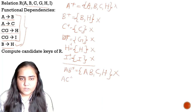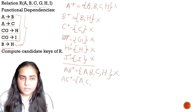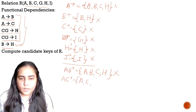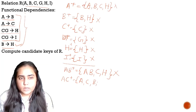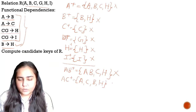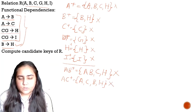Next I have AC-plus. So I can have A and C. Using the first dependency, I can add B. Using the last dependency, B determines H, I can add H. And that's all. But I didn't get all the attributes, so AC is not a candidate key either.